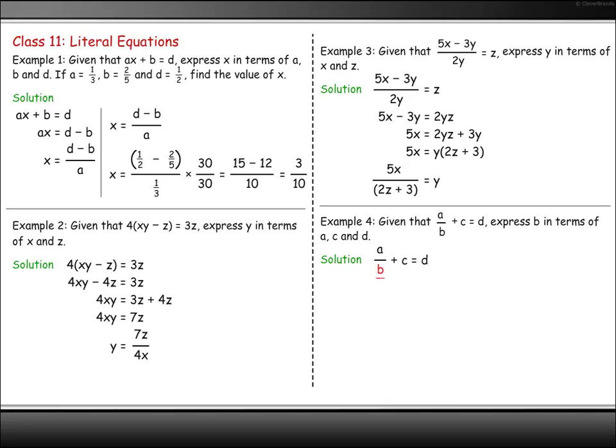Get the term with b in it on its own. Multiply right across by b to get rid of the fraction. Bring all the terms with b in it to the right-hand side. Factorize the right-hand side by taking out b in common. Divide both sides by the bracket (d - c) to get b on its own.